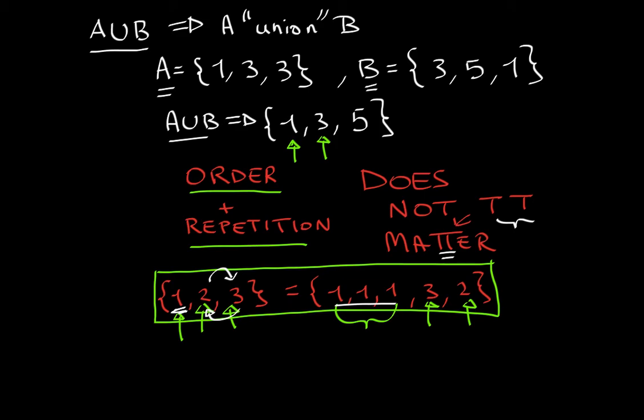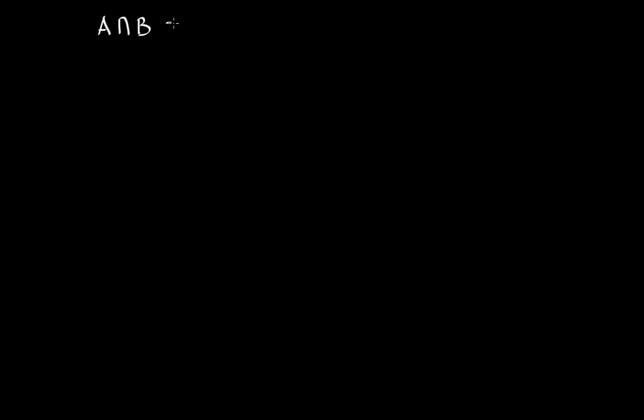One thing I did not introduce last time is intersection. So let's look into this. If you open up your real analysis textbook and you see A, then this weird upside-down U, and then B — in English, you read it as A intersect B. This is called an intersection.